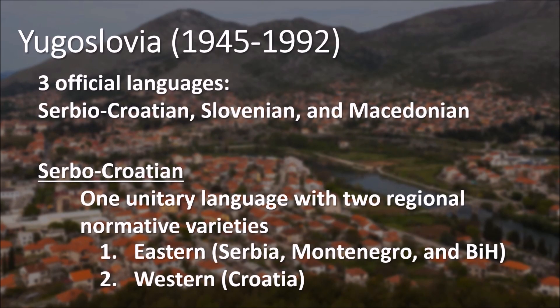Yugoslavia came about in 1945 and lasted until 1992. At that time there were three main official languages: Serbo-Croatian, Slovenian, and Macedonian. Later, Serbo-Croatian was divided into Serbian, Croatian, and Bosnian. During Yugoslavia, there was one unitary language with two regional normative varieties — Eastern, covering Serbia, Montenegro, and Bosnia-Herzegovina, and Western, which was Croatia.